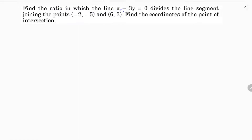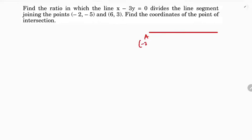Find the ratio in which the line x minus 3y equals 0 divides the line segment joining the points minus 2 comma minus 5 and 6 comma 3. Here, the line segment AB is taken as A at (-2, -5) and B at (6, 3), and this line segment AB is divided by the line x minus 3y equals 0.